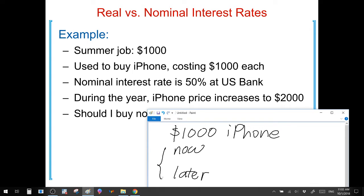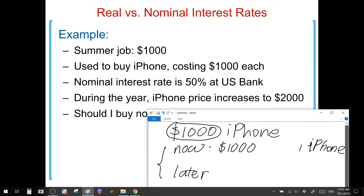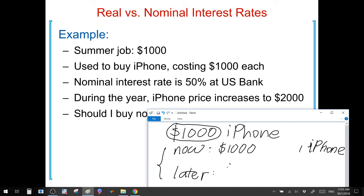If you buy an iPhone now, one iPhone costs $1,000, so you can afford one iPhone. If you decide to buy the iPhone later, you can save your money in a U.S. saving account. And imagine the interest in the saving account is 50%.